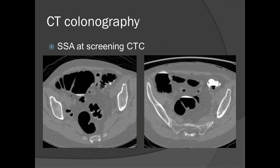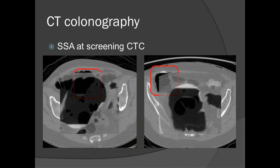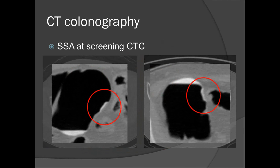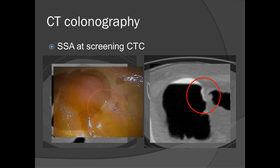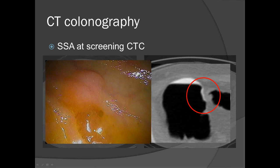Here's another patient with that newer lesion identified over the last several years — a flatter lesion. Here it is on optical colonoscopy. This was removed and turned out to be something called a sessile serrated adenoma — a great save, as it's a benign lesion that without removal would become cancer in the future.